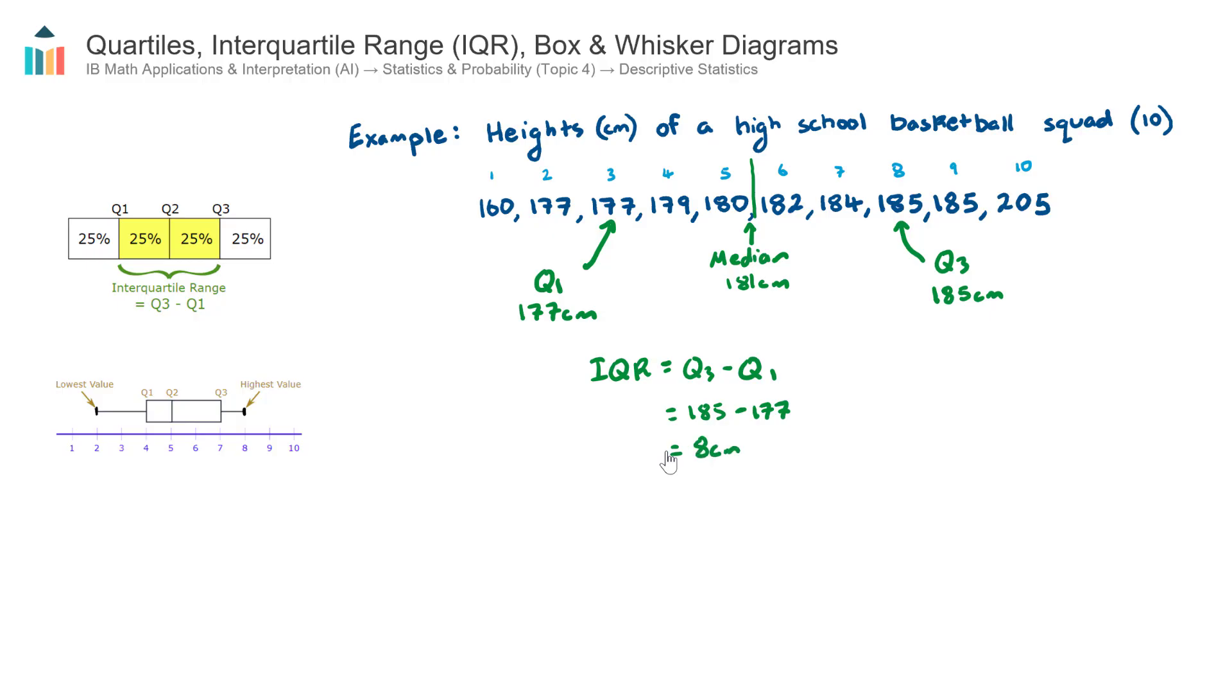As opposed to the total range, which was 45 centimeters. So this is another descriptor of the range of these basketball player heights, and it's probably a better description of these middle eight players, players 2 through 9.